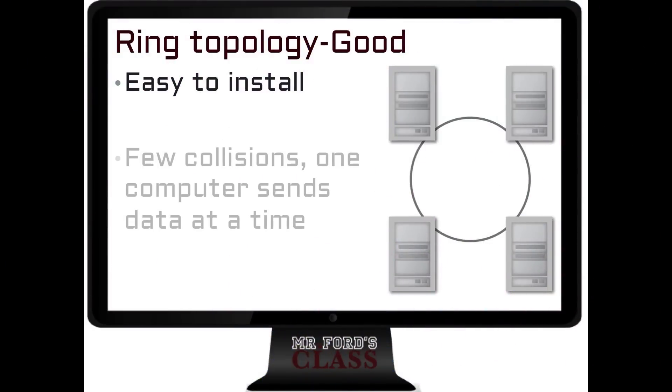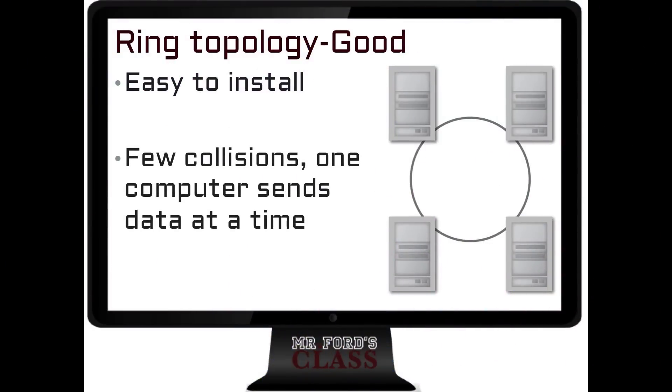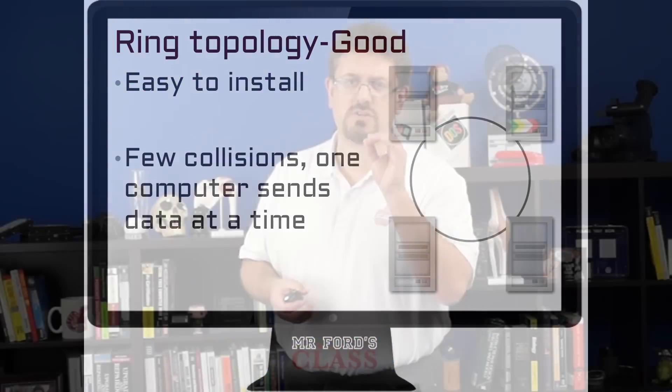The good things about the ring topology — remember, you have to know the good and bad about each of these. The good from the ring topology is that it's easy to install and there are very few collisions. One computer sends data at a time, which is opposite to the bus topology, where the more computers you had on that network, the more collisions you had.